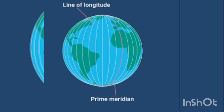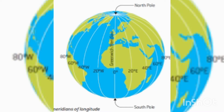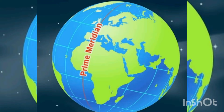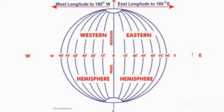Lines which run vertically from north to the south are called as longitudes. Longitudes are also called as meridians. The meridian which lies at zero degree is called as prime meridian or Greenwich meridian. It is taken as a standard reference point. Its value is zero degree longitude and from it we count 180 degrees eastward and 180 degrees westwards.